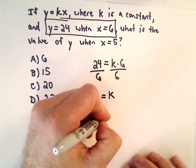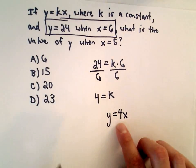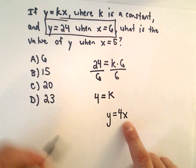So now we know that our equation is of the form y equals 4x. We just solved for k and now all I have to do is substitute in x equals 5.